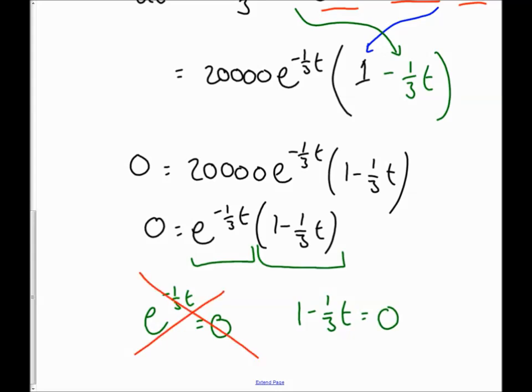This one cannot be zero. E to the power will never be zero. So this must be the one where my dv by dt equals zero comes from. So I can get a third t equals one, so I can find out that t is going to equal three.